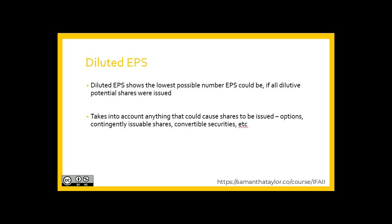Diluted EPS takes into account anything that could cause shares to be issued — options, contingently issuable shares, convertible securities, etc. Essentially, we want to see the worst that earnings per share could have been during the year.